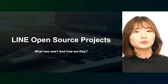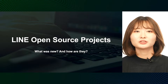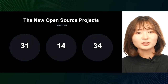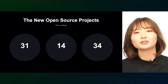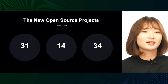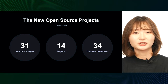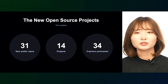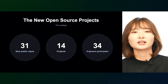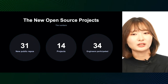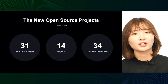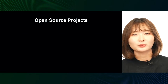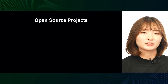First, I will introduce what the newly released Open Sources are and how well they have been operating during these years. Let's look at these numbers. A total of 31 public repositories were created from January to October, and these 31 repositories consisted of a total of 14 projects. We found that 34 engineers participated in the new Open Source release projects. Let's take a quick look at the newly released Open Source projects one by one, introduced in order of when they were published.